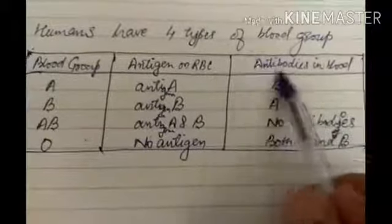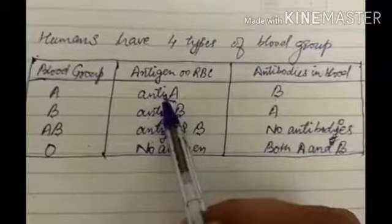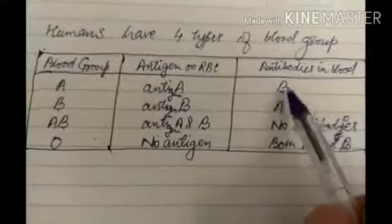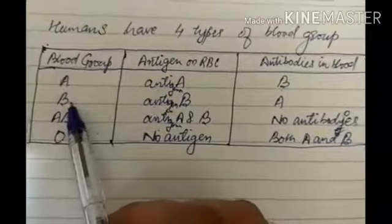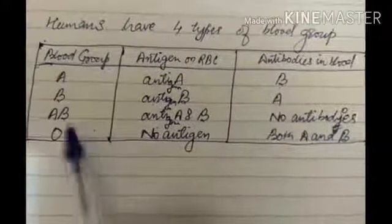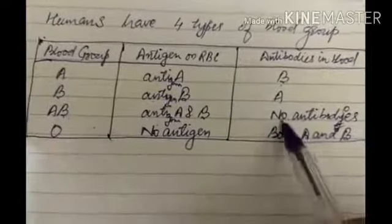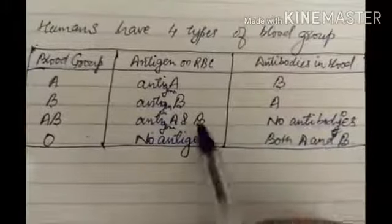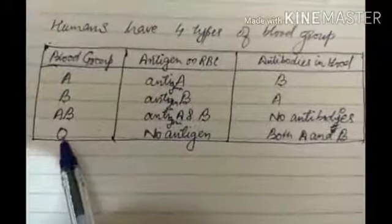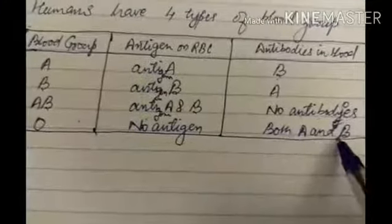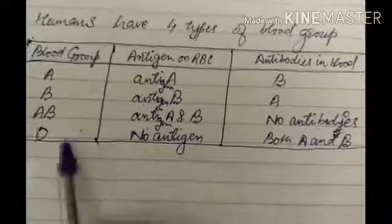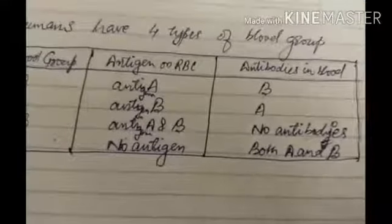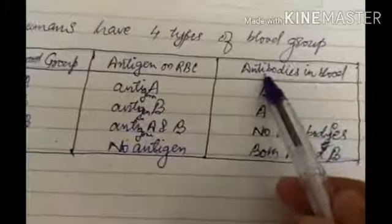Antigens are present on the surface of the RBC, but antibodies are found in the blood plasma. A person with blood group A has antibody B in their blood. A person with blood group B has antibody A. A person with blood group AB has no antibodies against A or B. A person with blood group O has both A and B antibodies. The function of antibodies is to kill germs.